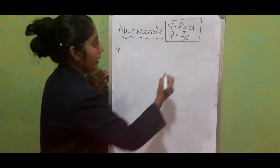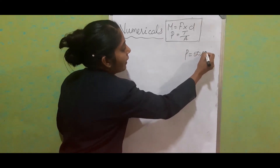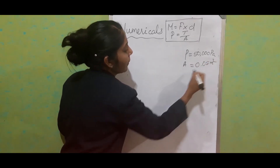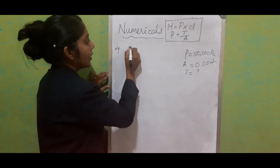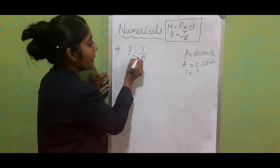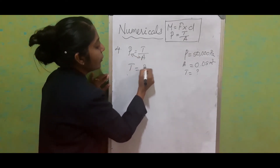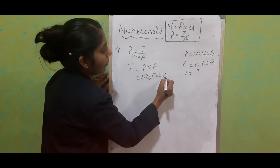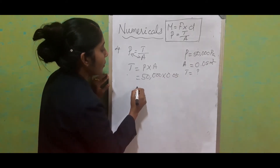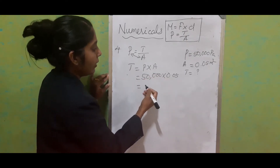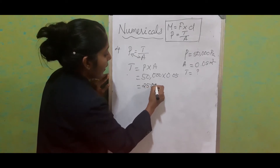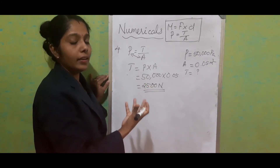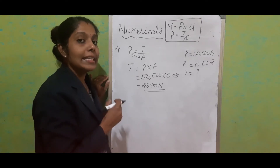Let's see the 4th question. The pressure is given as 50,000 Pascal and the area is equal to 0.05 meter square. We have to find the thrust. Using P is equal to T by A and rearranging by cross multiplication, thrust is equal to pressure into area. Substituting: 50,000 into 0.05, we get 2,500 Newton. Just substitute, rearrange the equation, and find the answer with proper unit.